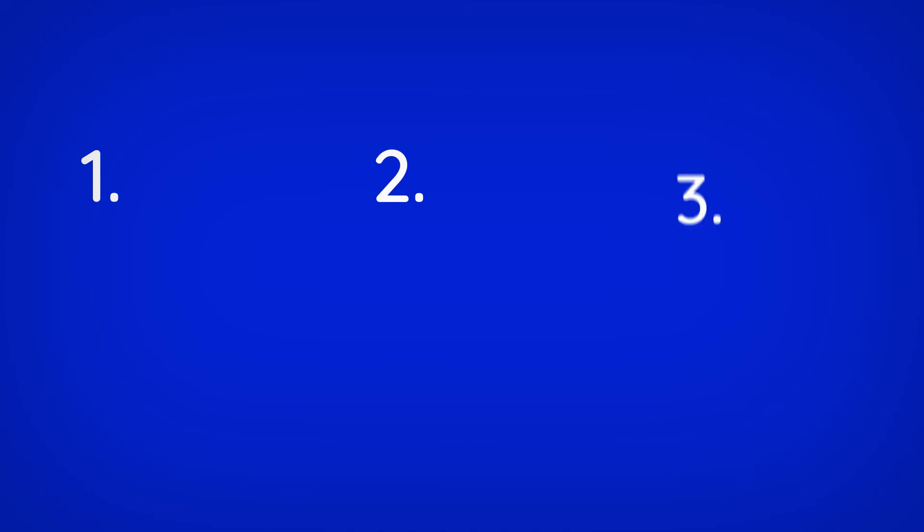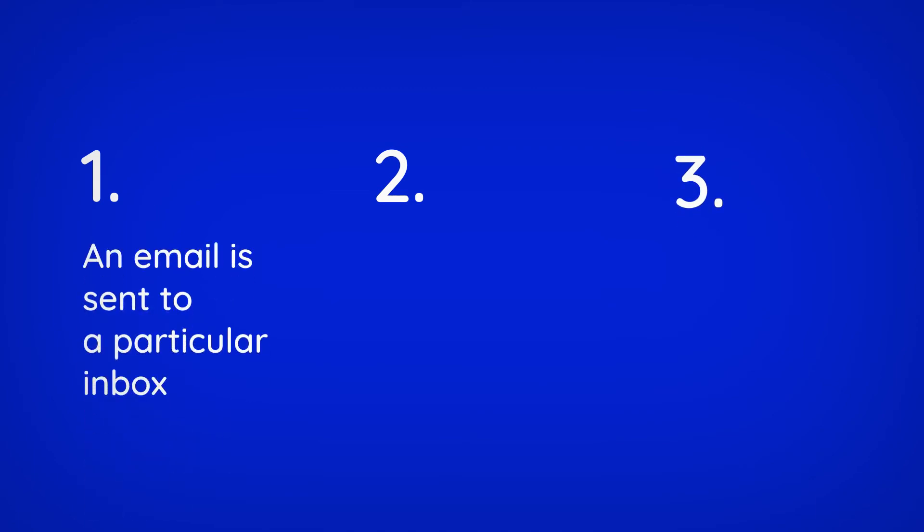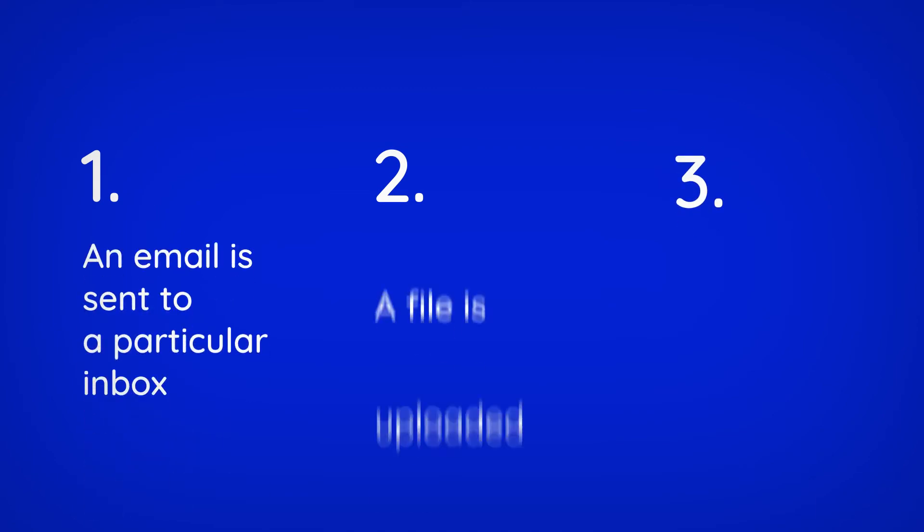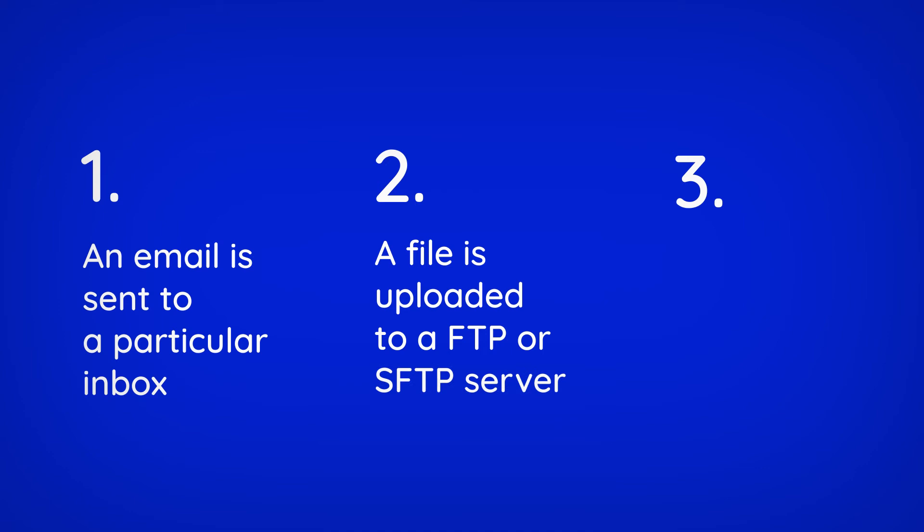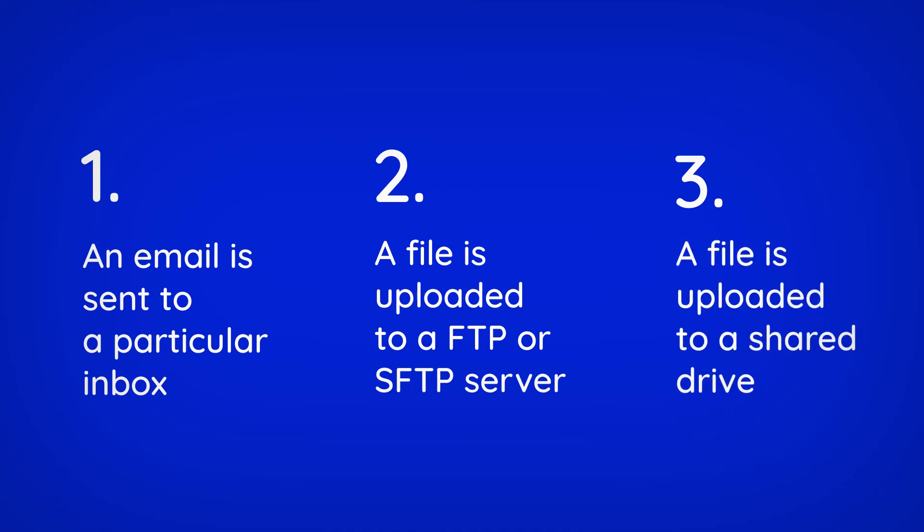There are three main ways of using smart connectors: an email is sent to a particular inbox, a file is uploaded to an FTP or SFTP server, or a file is uploaded to a shared drive. Each of these can trigger the creation of a new project in XTRF. XTRF can even extract information from the body of an email and use this to create a project or add it as client instructions.